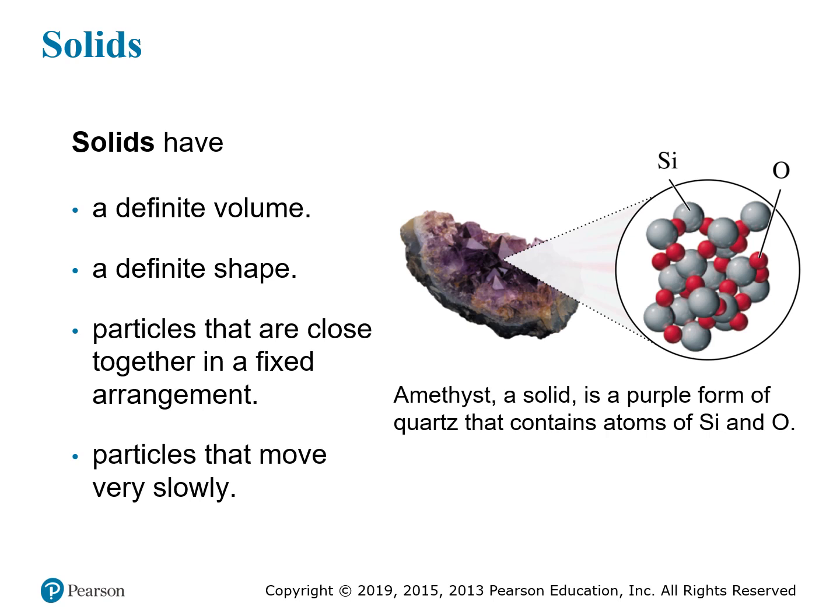The particles in a solid move or vibrate a little bit around their fixed positions, but relative to one another, they do not move at all, really. Since they're not moving very much, that means they don't have very much energy. Amethyst is an example of a solid — made from silicon atoms and oxygen atoms, with some other atoms that give it its particular color. The silicon and oxygen atoms are fixed in their positions relative to one another.